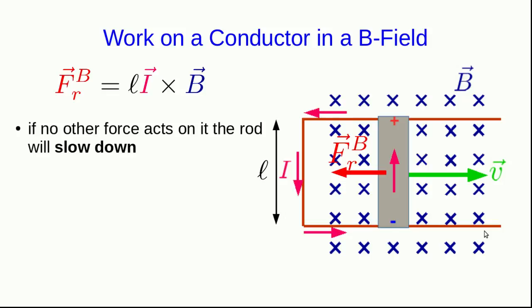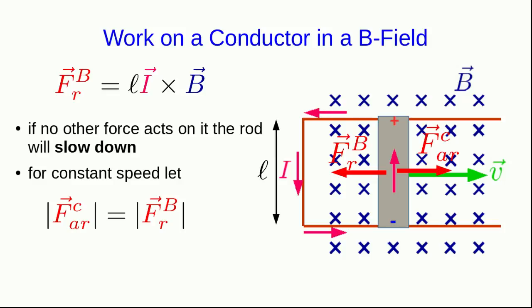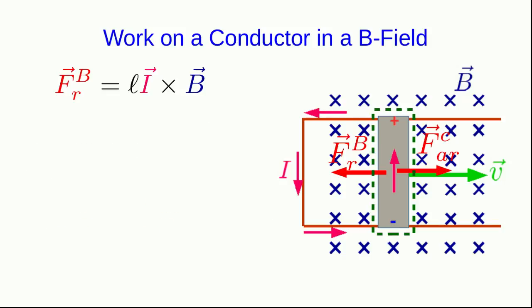To keep things simple and maintain a constant rate of increase of flux through the loop, we don't want the rod to slow down. That requires pulling on the rod in the direction of its motion — some contact force by an external agent, perhaps your hand, pulling the rod so that it moves at constant velocity. For constant speed, the magnitudes of this contact force and the magnetic force must be equal. Taking our system as just the rod: it's moving at constant speed, has no potential energy, so the change of energy is zero. The work done by the B-field and the work done by the external agent add up to zero — one is the negative of the other.